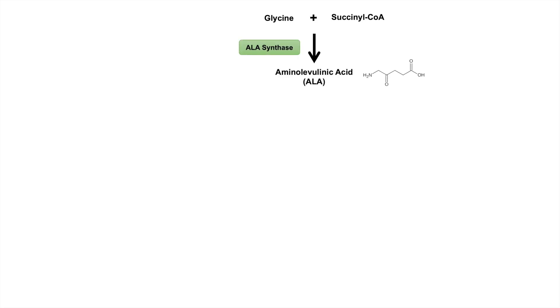Heme synthesis requires the amino acid glycine and succinyl-CoA, and these two components are used by the enzyme ALA synthase to produce aminolevulinic acid, or ALA. ALA synthase is inhibited by heme, and this will become important later on in the lesson.